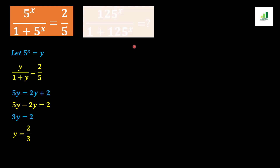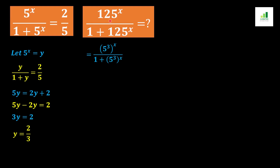Now we simplify the target expression 125^x over (1 + 125^x). Since 125 can be written as 5^3, we have 125^x = (5^x)^3. So the expression becomes (5^x)^3 over (1 + (5^x)^3).